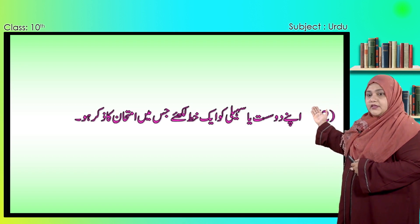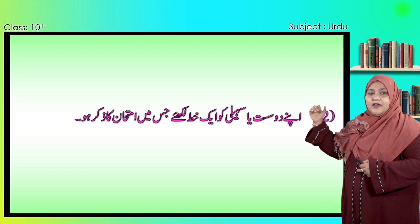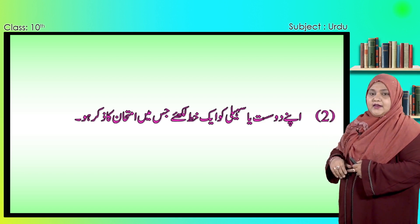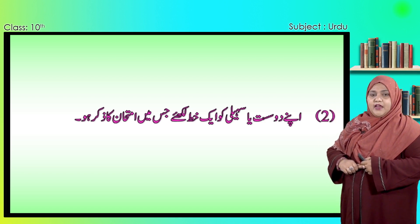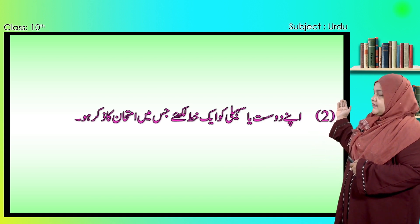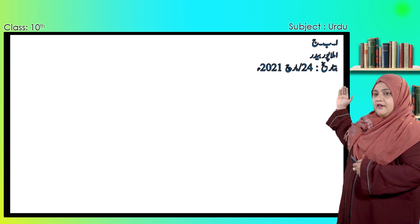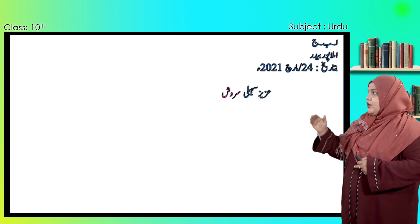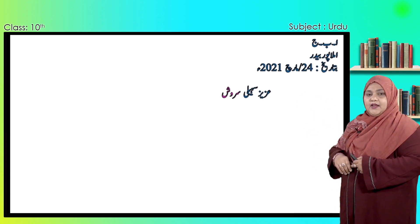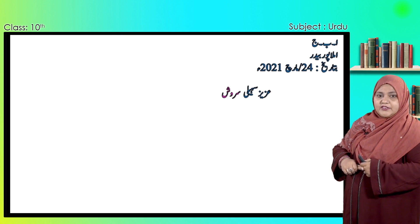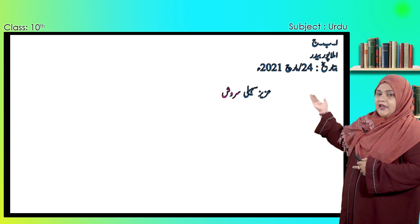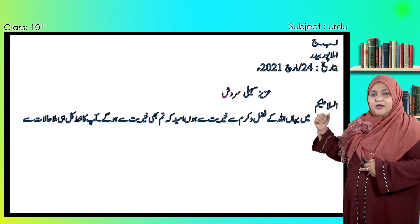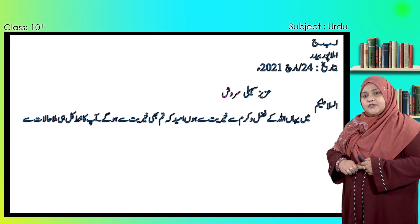اور دوسرا سوال کیا ہے: اپنے دوست یا سہیلی کو ایک خط لکھیے جس میں امتحان کا ذکر ہو۔ یہ سوال بھی امتحان کے نقطہ نظر سے بہت اہمیت رکھتا ہے، اکثر اس طرح کا سوال آپ کے سالانہ امتحان میں پوچھا جاتا ہے۔ تو چلیے بچو، اب ہم دیکھیں گے خط کس طرح سے لکھیں گے۔ سب سے پہلے آئے گا نام، پتہ اور تاریخ، پھر آئیں گے القاب۔ دوست یا سہیلی کے لیے ہمارے القاب کیا ہوں گے: عزیز سہیلی سروش — یہاں پر میں نے نام دیا ہے۔